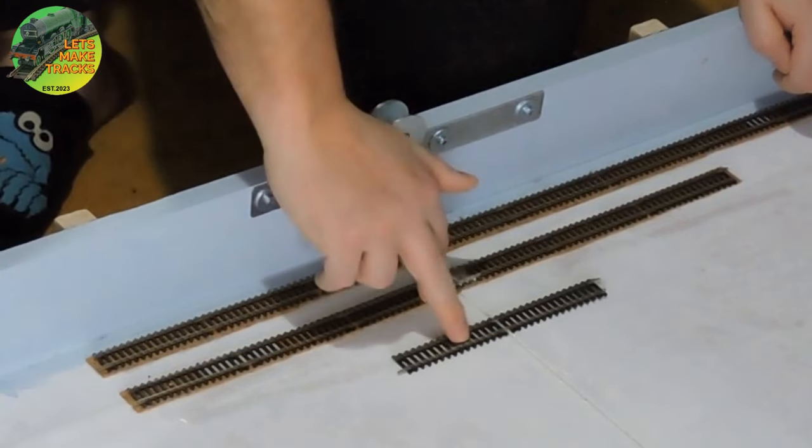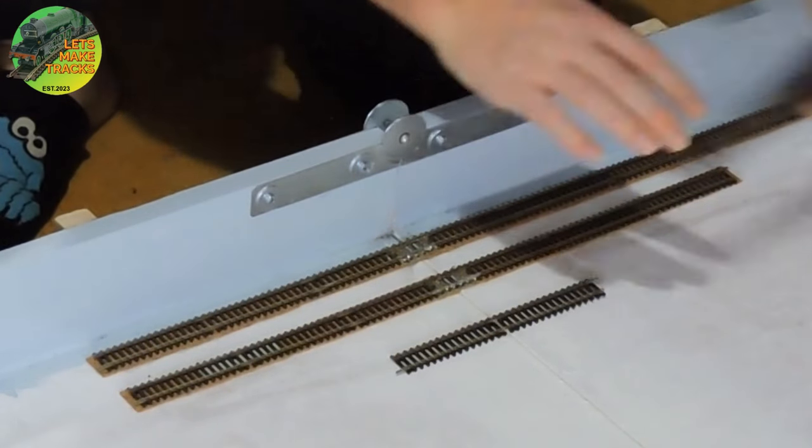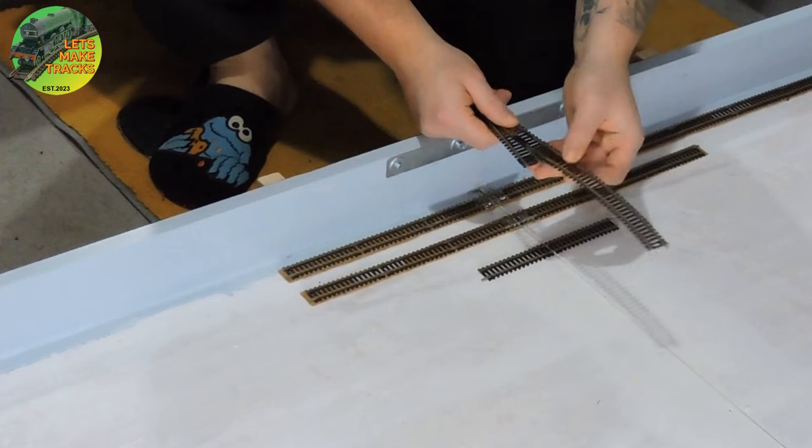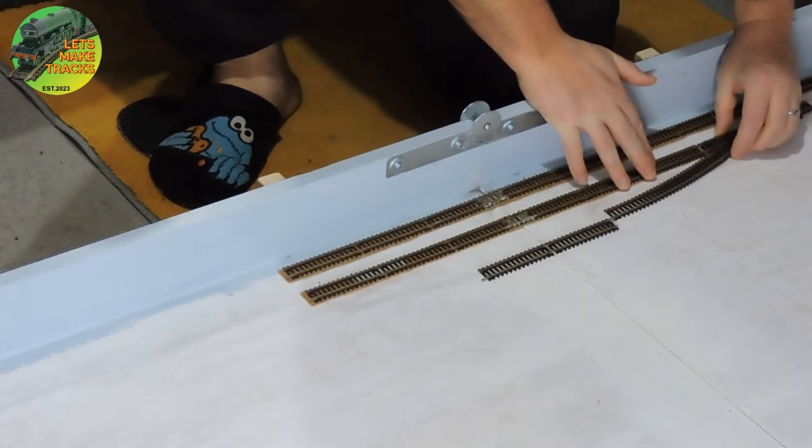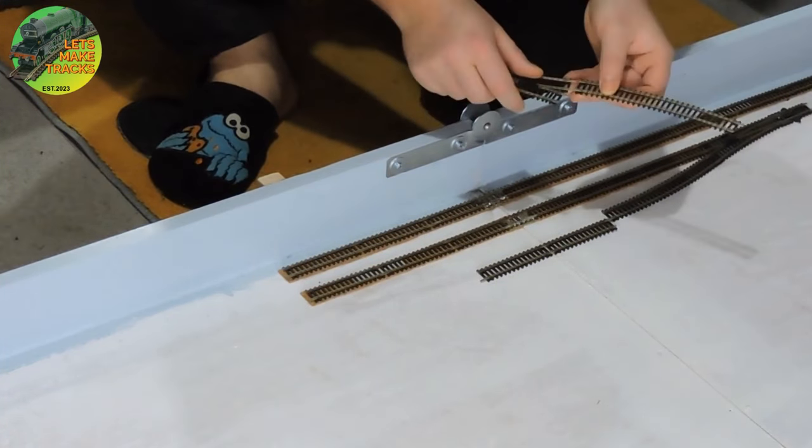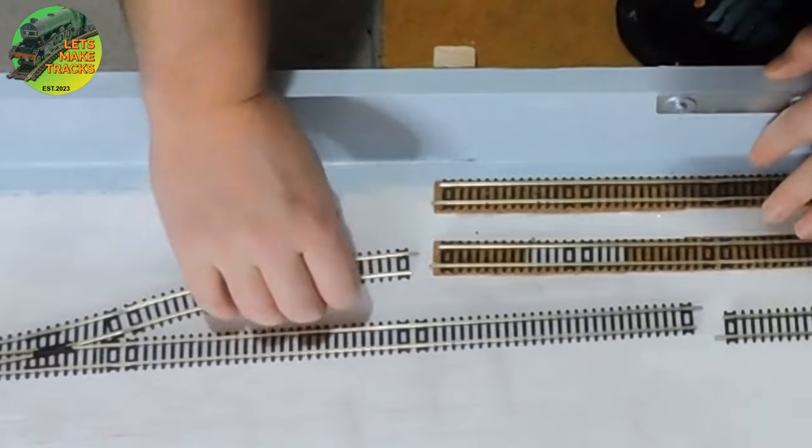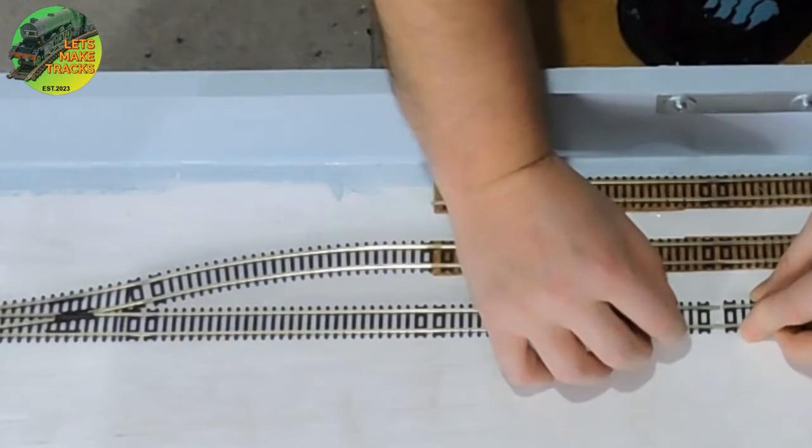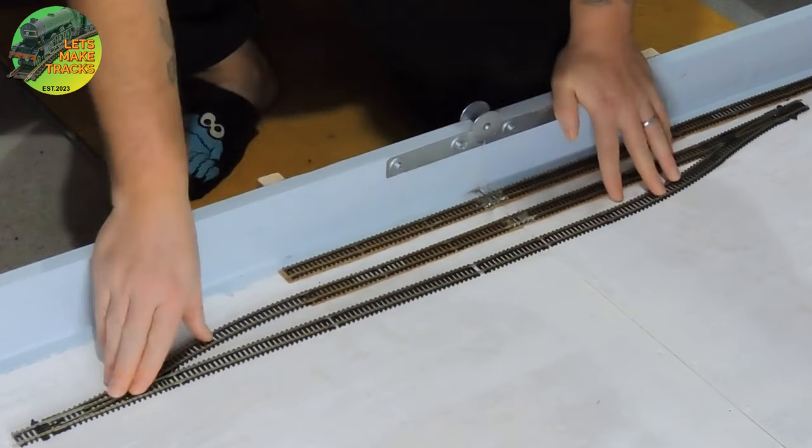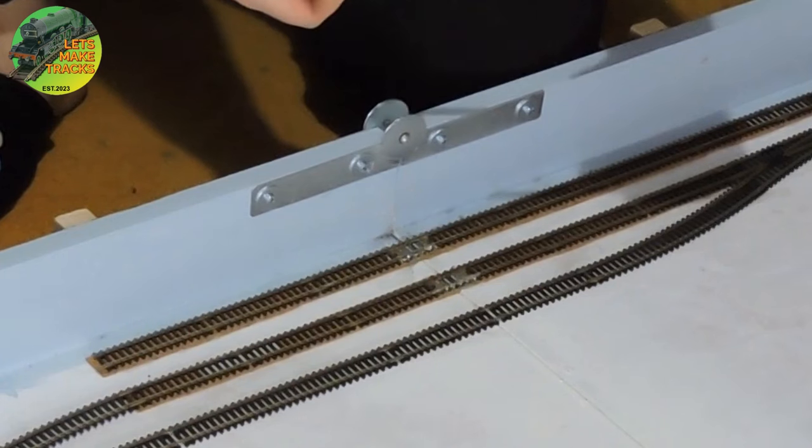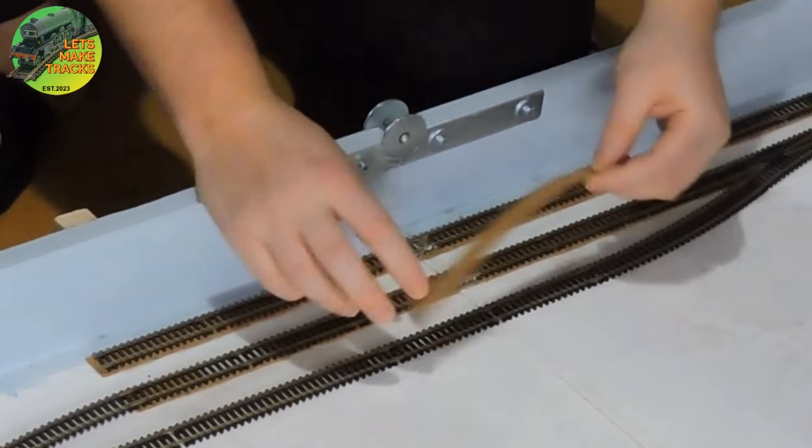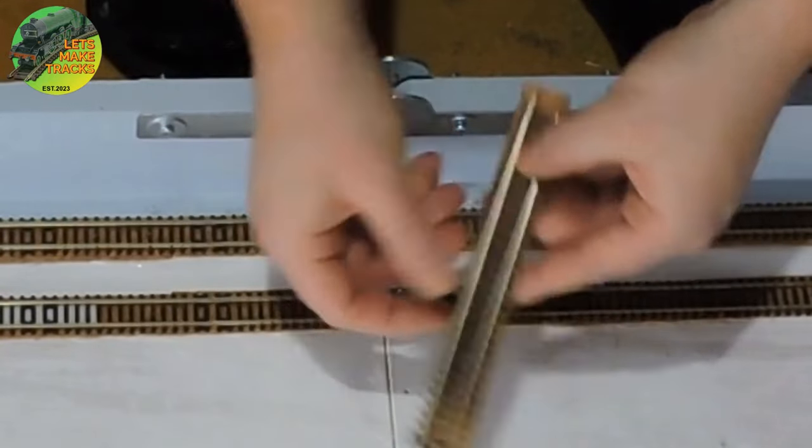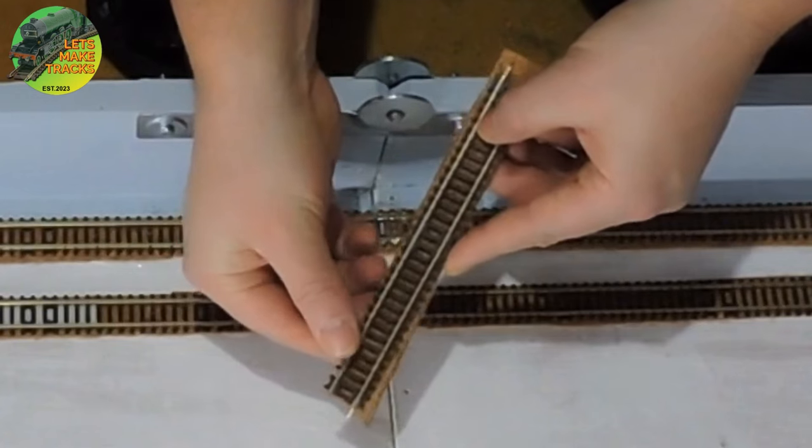To ensure I get the correct distance in between the tracks, what I'm going to do is use some spare points I have laying around and some sixth radius curves to create a temporary run around loop. This will help ensure that the track centres are the correct distance apart and all the track pieces are in line also.